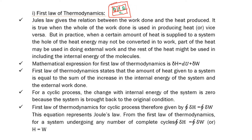If two bodies are each separately in thermal equilibrium — that is, if A and C are in thermal equilibrium, and B and C are also in thermal equilibrium — then A and B are also in thermal equilibrium with each other. This is the zeroth law of thermodynamics.